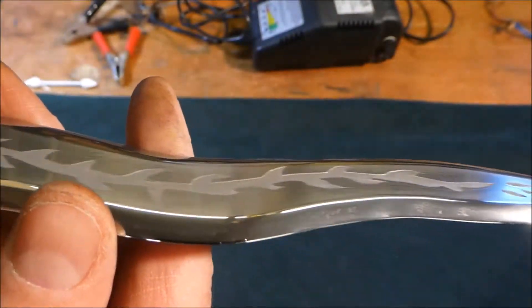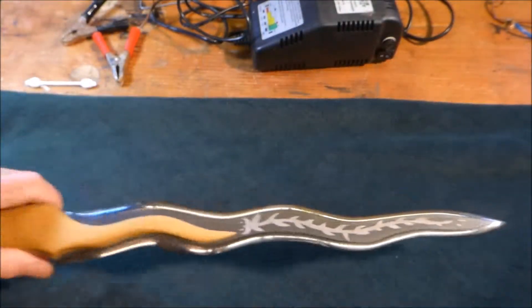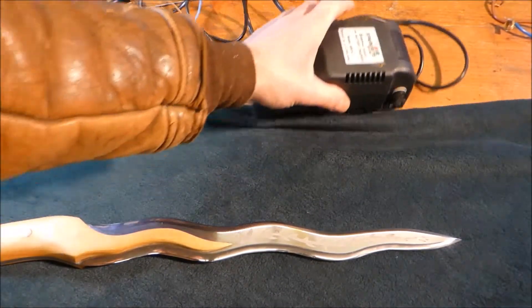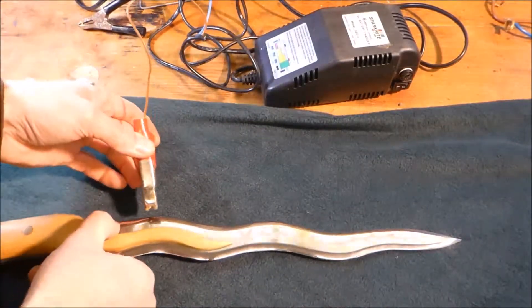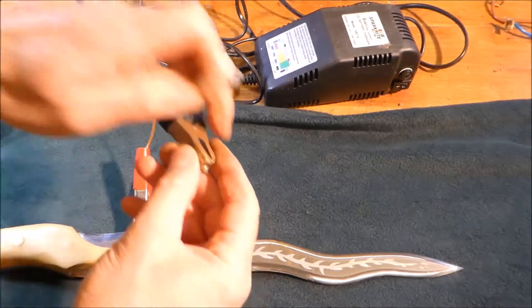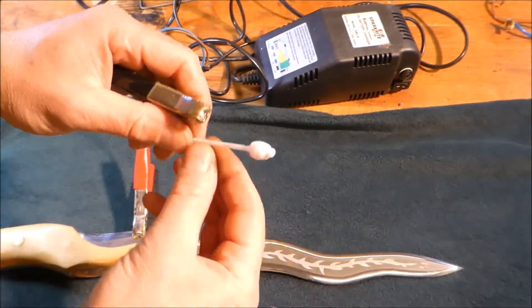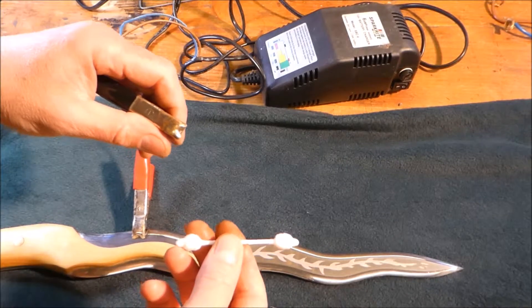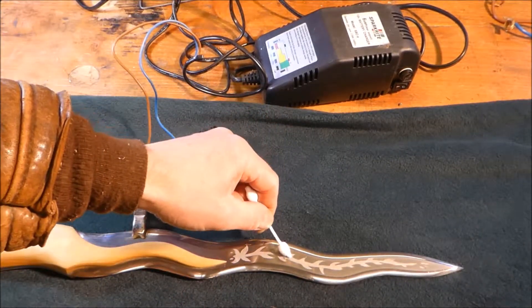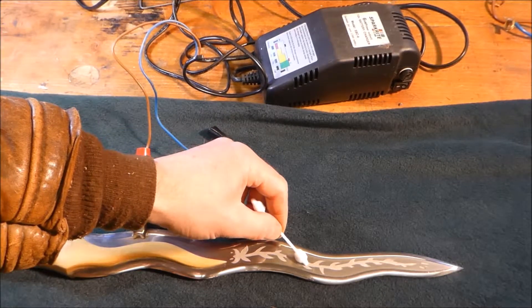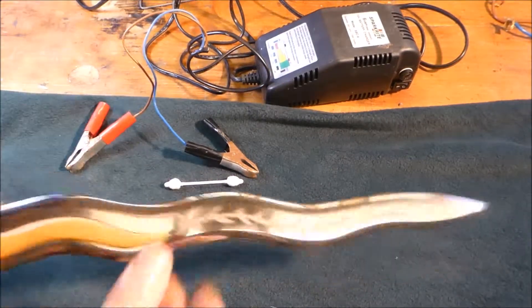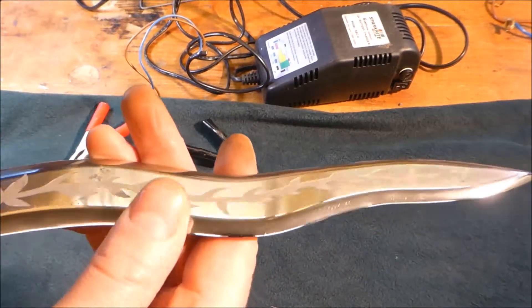So all I used was cheap car charger. One end, live end you plug onto your steel. The neutral end you fix on with a piece of wire to a cotton bud. You keep dipping the cotton bud in the salty water and then just touch it. It makes a contact. And the salty water boils and somehow it eats into the steel. It's just unbelievable. It's weird that it can eat in like that.